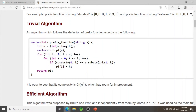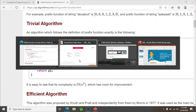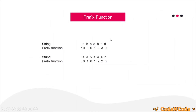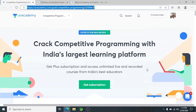The overall complexity of the naive approach is O(n³). It's important to understand how the prefix function is calculated before moving on, because understanding this is very important.